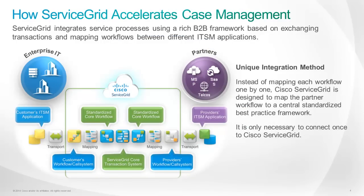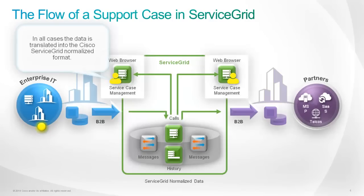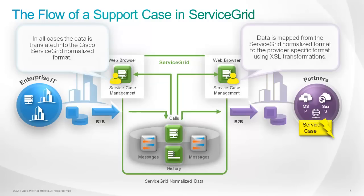The Service Grid core is a standard component that provides a set of well-defined workflow definitions to support service requests, incident, problem, and change processes. Instead of mapping workflows one by one to connected partners, they are mapped to the standardized core workflow only once. The principle of double translation is used to map processes and workflows within Service Grid. All data is translated into a normalized format, enabling Service Grid to connect and integrate different service processes and systems very quickly.